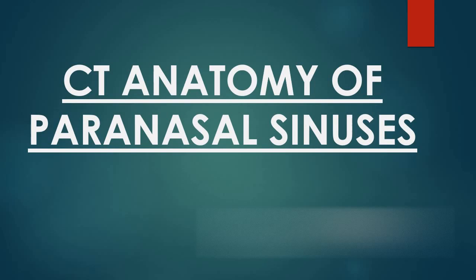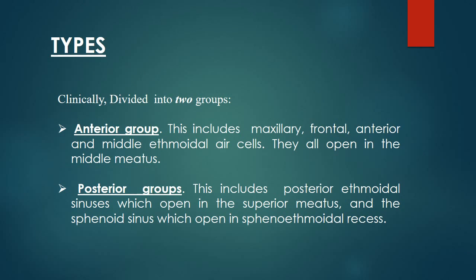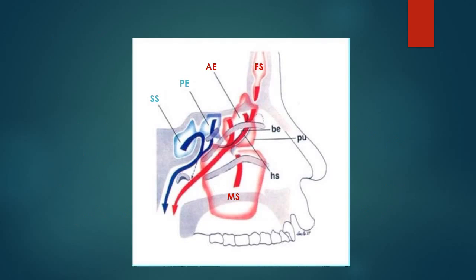Hello, CT anatomy of paranasal sinuses. Paranasal sinuses are divided into two types depending on their drainage: anterior group and posterior group. The anterior group includes those sinuses that open into the middle meatus, and they include maxillary, frontal, and anterior ethmoid air cells. The posterior group includes posterior ethmoid sinus, which opens into the superior meatus, and sphenoid sinus, which opens into the sphenoethmoidal recess.